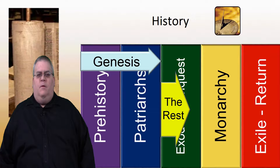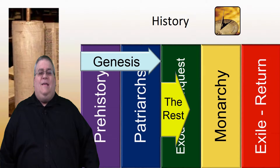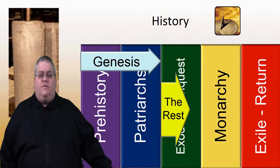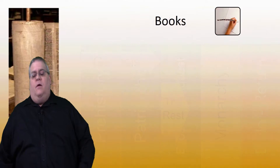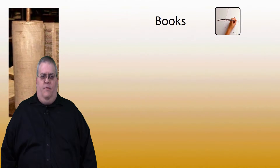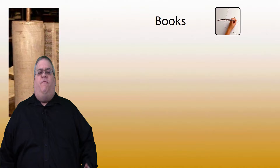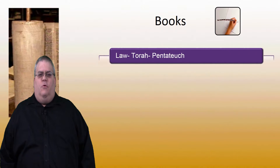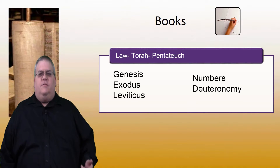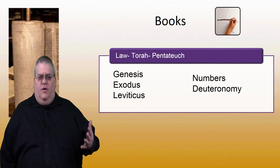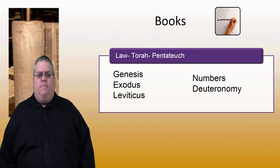And as such, it sets the historical tone for the rest of the Bible. And as a reminder, the five books of the Torah are Genesis, Exodus, Leviticus, Numbers, and Deuteronomy.